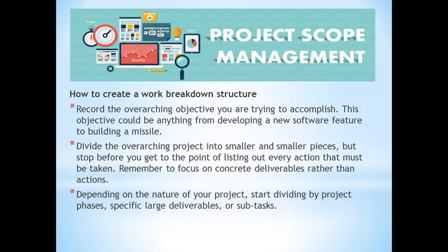To create a WBS, the first step is to record the overarching objective you are trying to accomplish — this could be anything from developing new software to building a missile. Next, divide the overarching project into smaller and smaller pieces, but stop before you get to the point of listing every action that must be taken. Remember to focus on concrete deliverables rather than actions. Depending on the nature of your project, start dividing by project phases or specific large deliverables and subtasks.